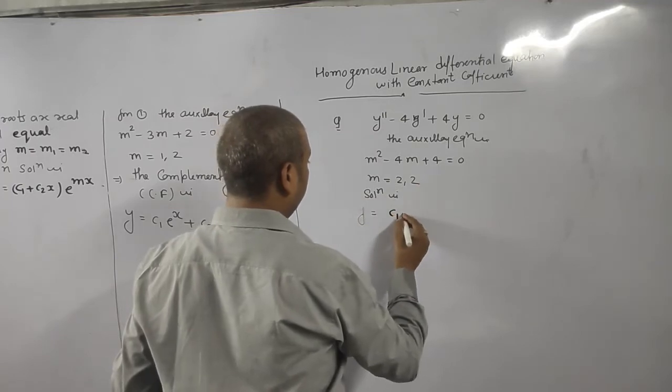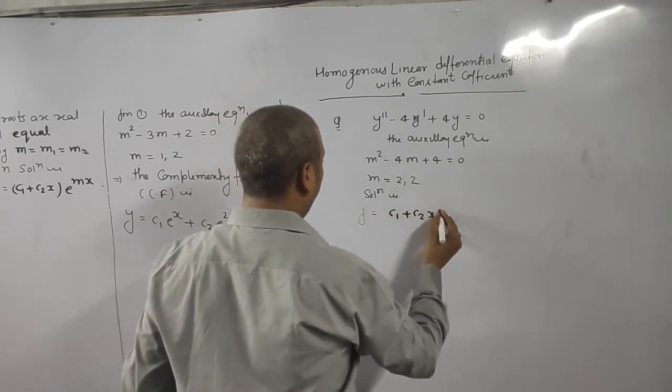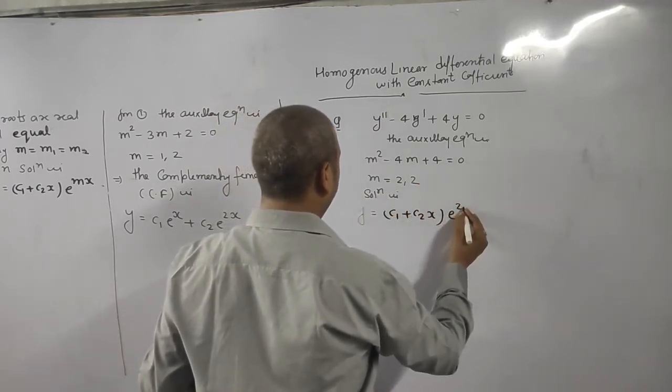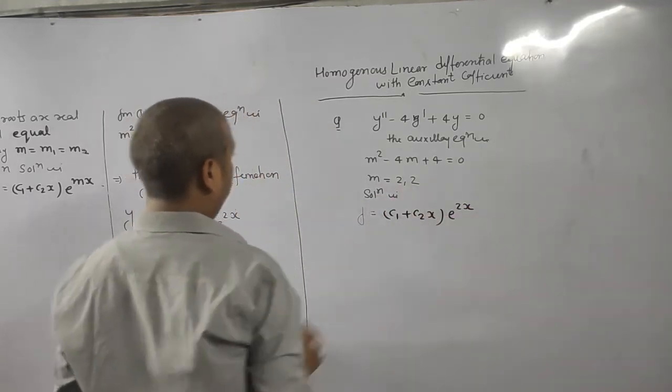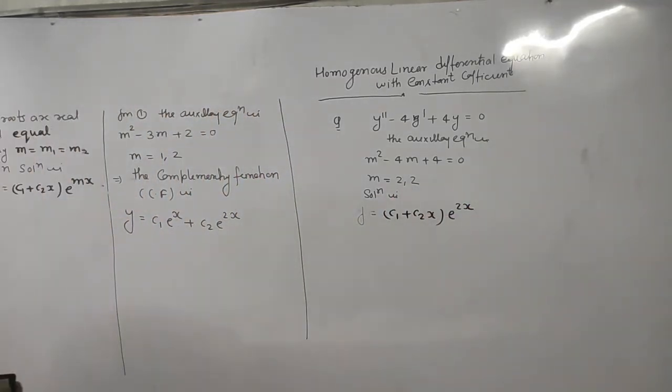Here, two roots are equal. So (c1 plus c2x) e to the power mx. Just we put m value.